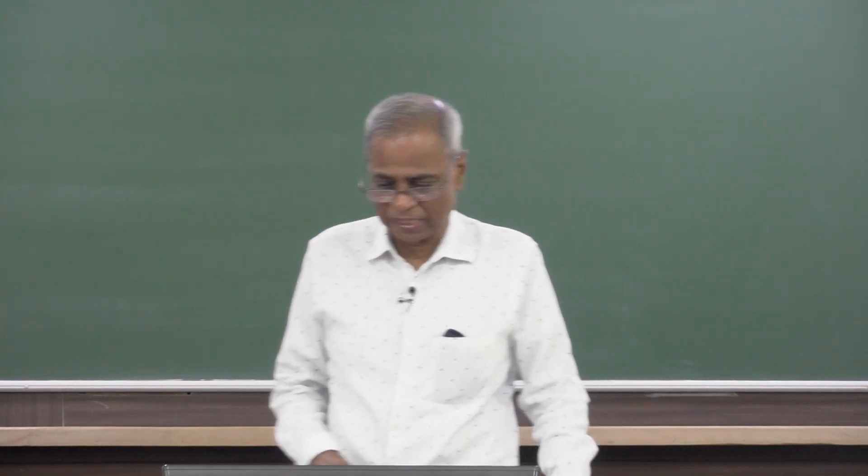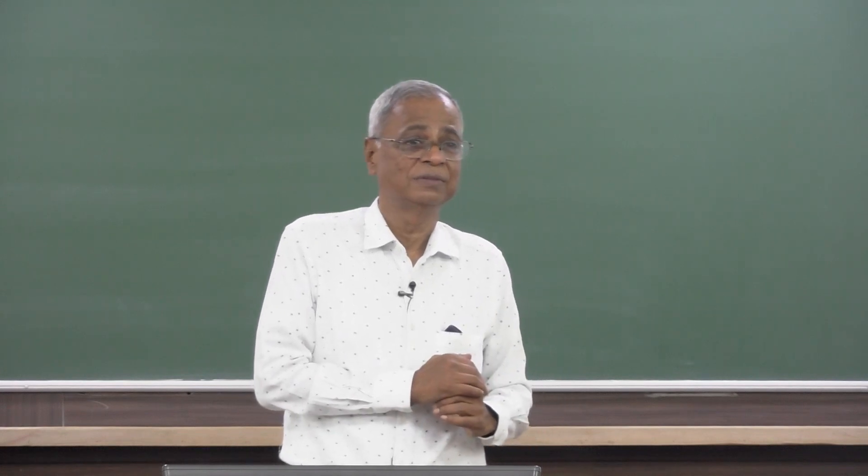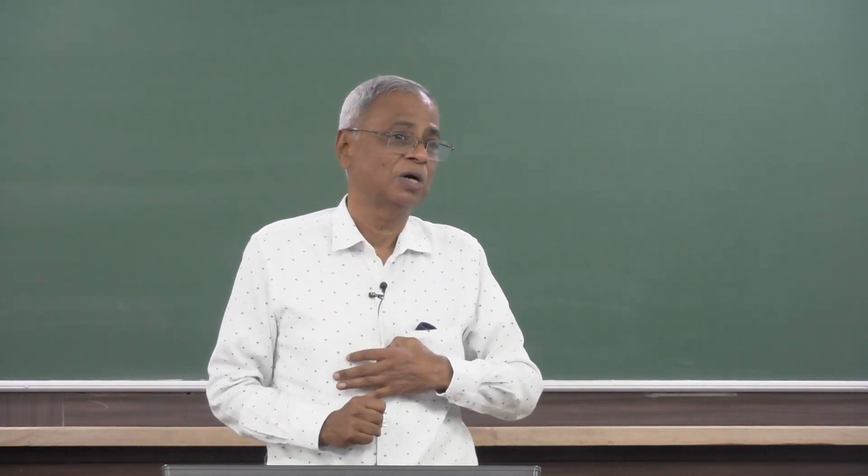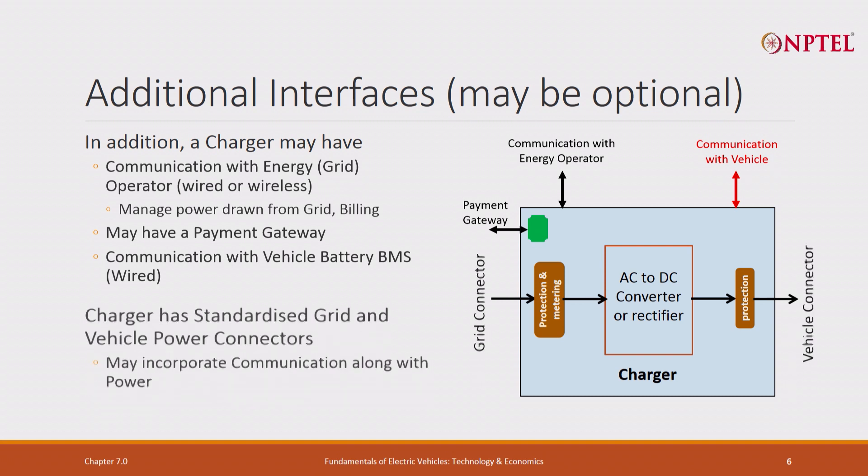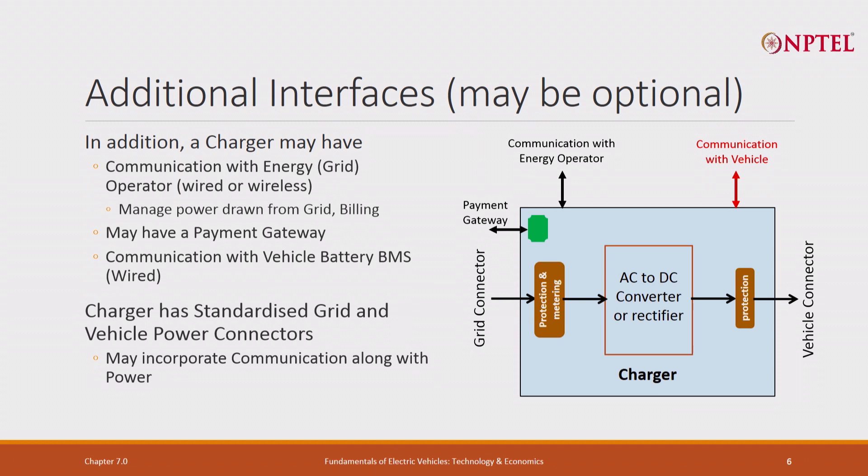For the time being, we simply say that you need to communicate to the grid to tell I am taking so much of energy from each charger. Each charger has to communicate. That is a communication with the energy operator. If it is a public charger, you want to make a payment, saying it is like a petrol pump. I have taken so much power, I want to make a payment. So there has to be a payment gateway incorporated in the charger. There has to be a communication with the vehicle because vehicle will tell me how much energy, what is the voltage, what is the current that I need, and it changes over time. I just showed you, it is not constant.